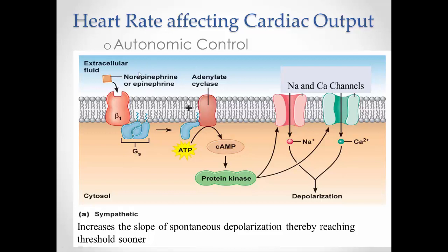Norepinephrine and epinephrine from the sympathetic nervous system bind to beta-adrenergic receptors, and that triggers the second messenger system, which ends with protein kinase. Protein kinase causes an increase in the number of sodium channels and calcium channels. If I have more sodium channels in auto-rhythmic cells, it's the leaking of sodium into the cell that takes that cell to threshold, then you get depolarization and an action potential. So with more sodium channels leaking, I get to threshold sooner, which raises heart rate.